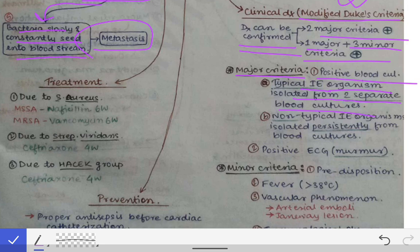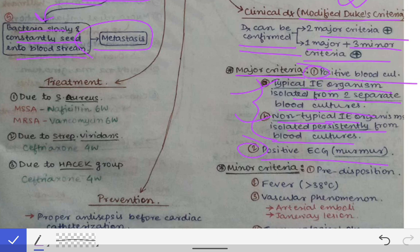If non-typical infective endocarditis organisms are isolated persistently from blood cultures, that also fulfills a major criterion. The second major criterion is a positive echocardiogram showing a murmur. So broadly, the two major criteria are a positive blood culture and a positive echocardiogram showing evidence of endocardial involvement.